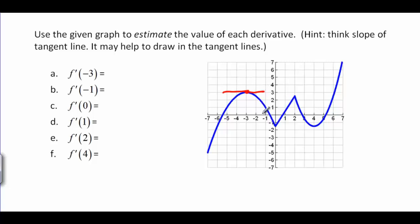It's the top of the hill there. So anytime you have the top of a hill or the bottom of a hill, like over here, at 4, you're going to have a slope of 0.